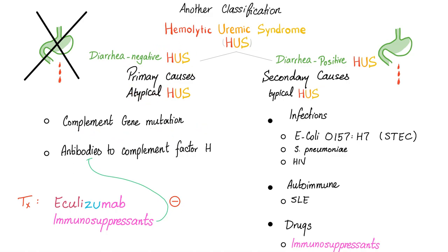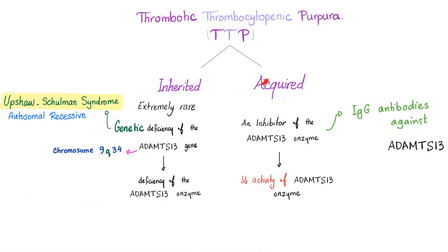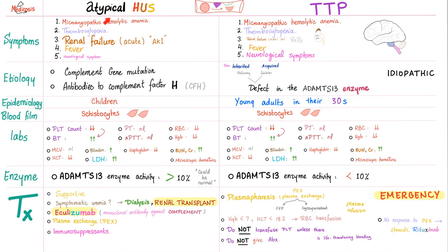The cause of atypical HUS is complement gene mutation or antibodies to complement factor H. Typical HUS is related to E. coli O157:H7. In TTP, it is inherited or acquired — inherited means a genetic deficiency of ADAMTS13, and acquired means there is an inhibitor, usually an IgG antibody against ADAMTS13. In both cases, ADAMTS13 enzyme activity in the plasma is less than 10% of normal, which is very low.